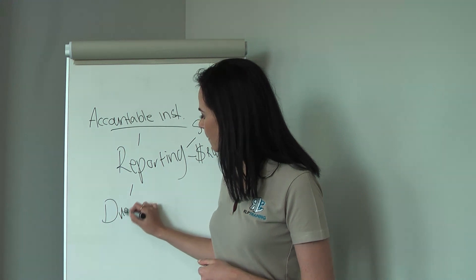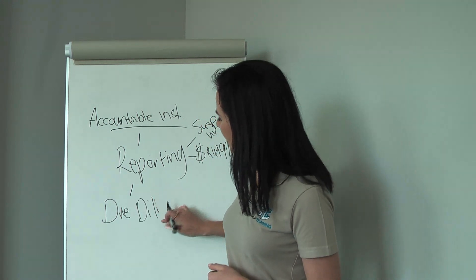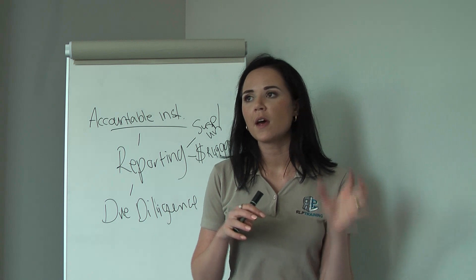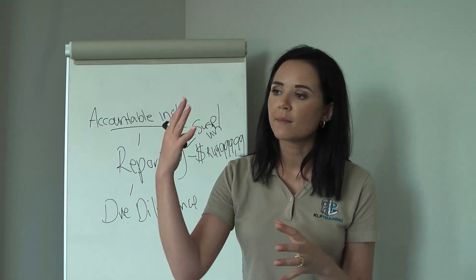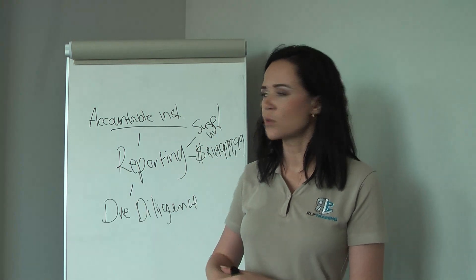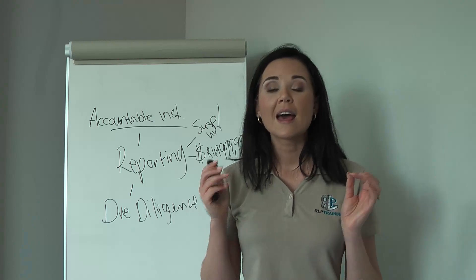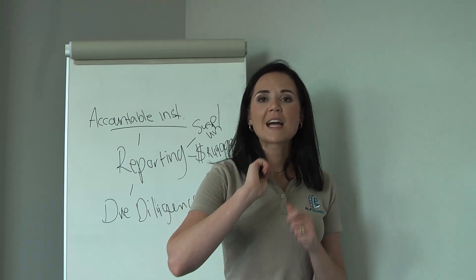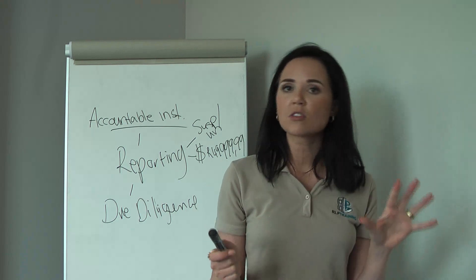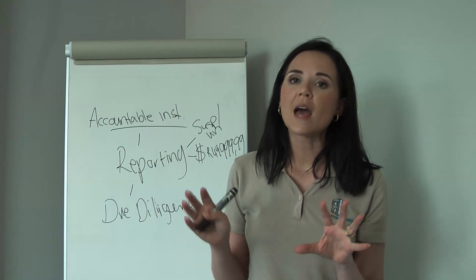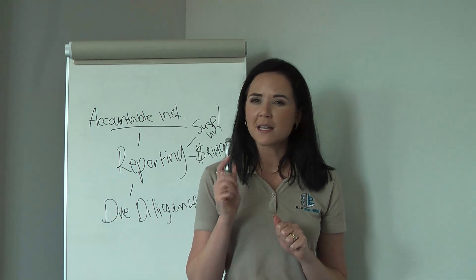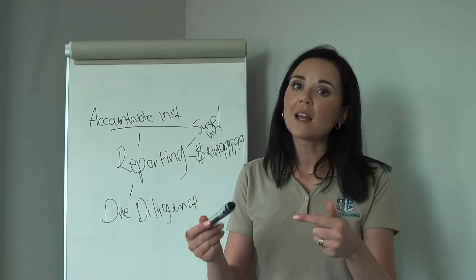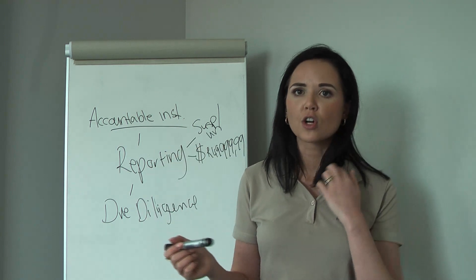Accountable institutions are also responsible for due diligence. Due diligence is simply the fancy word for identifying and verifying a client. If you read in your learning material that the FSP or accountable institution must conduct due diligence, it just means they have to identify and verify the client. Crucially, this must be done before the transaction is concluded — not during or after.